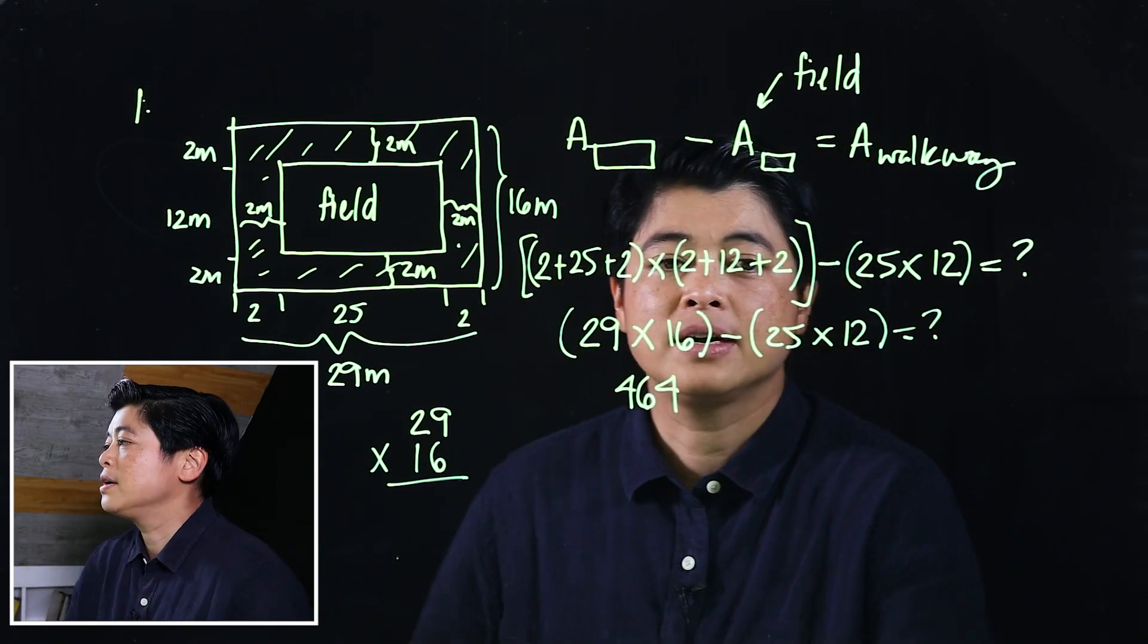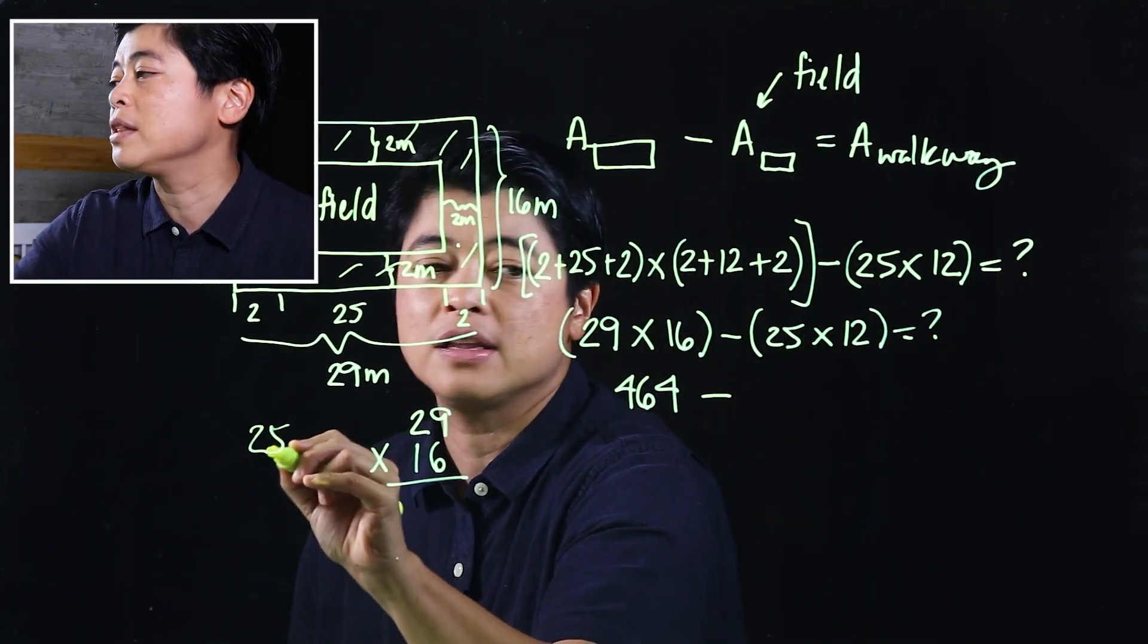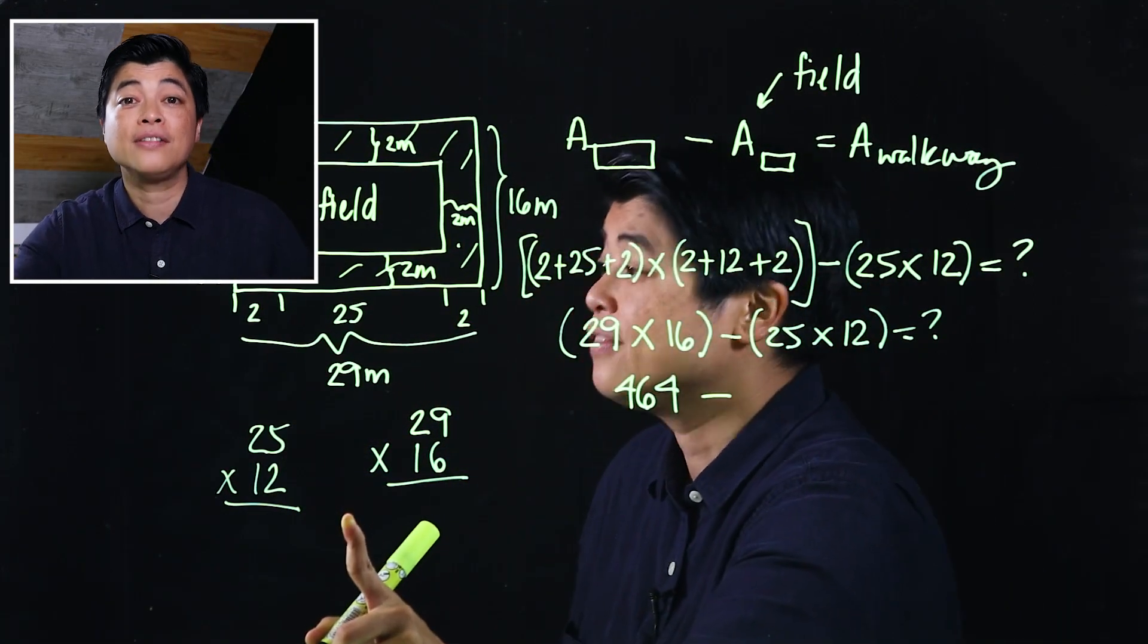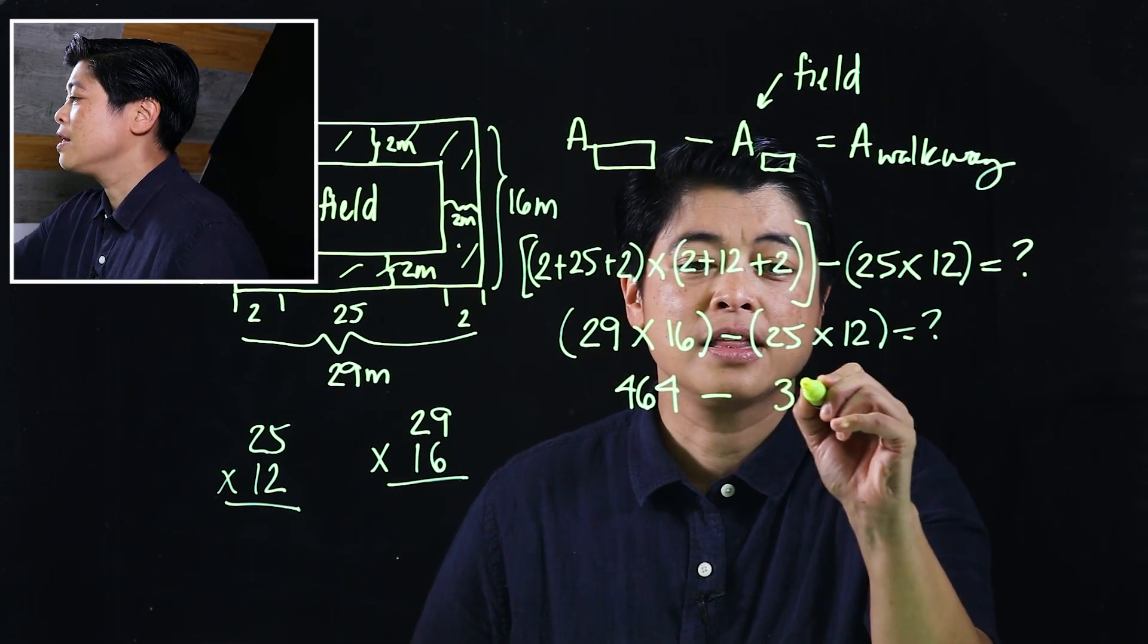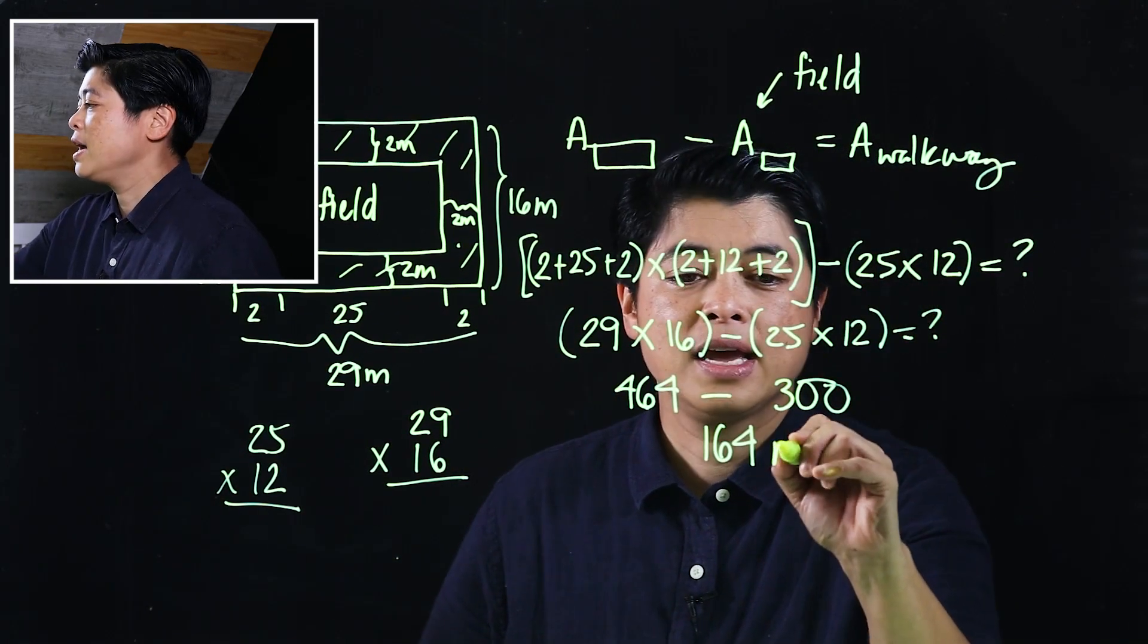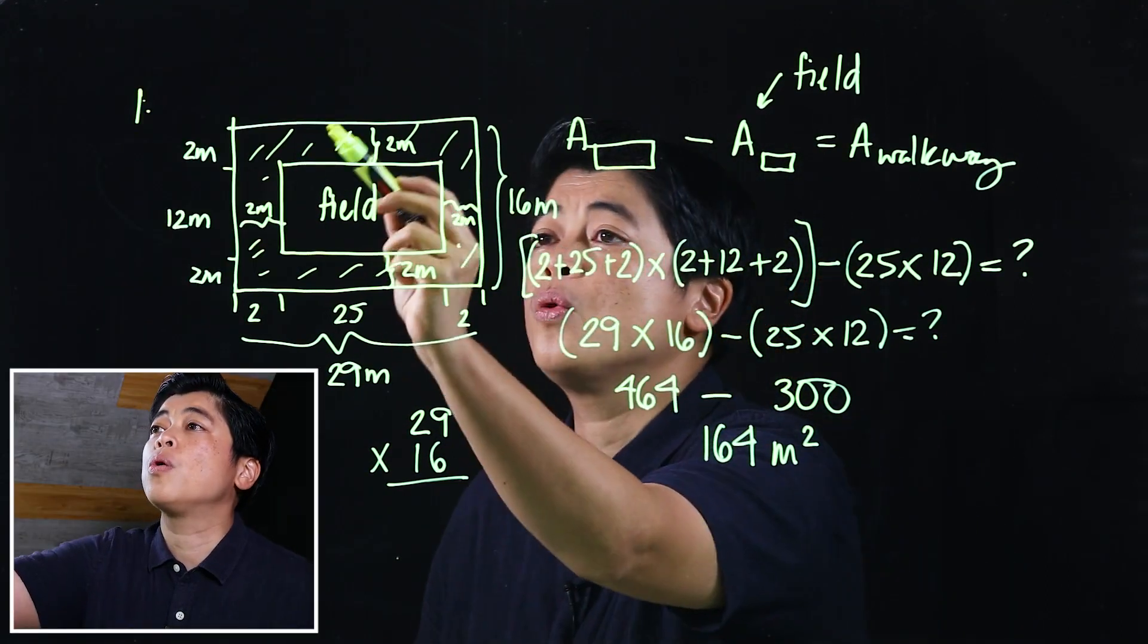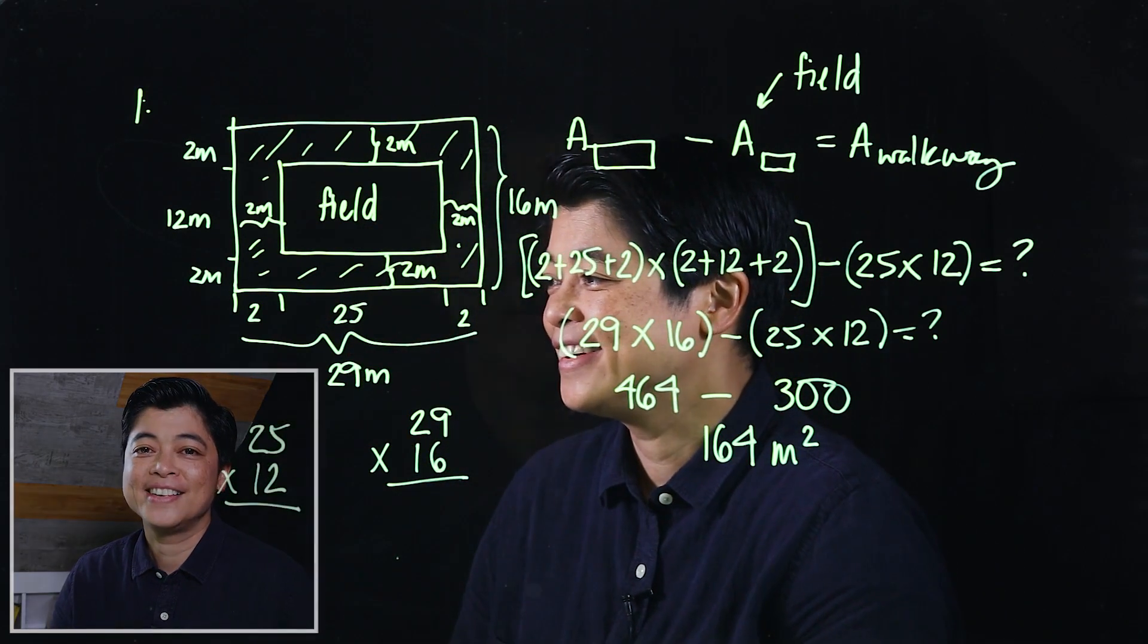Then if we subtract this computationally, 25 times 12. If you compute that would be 300. Which means if we subtract that will be 164, and this is meters squared. So the area of the walkway is 164 meters squared.